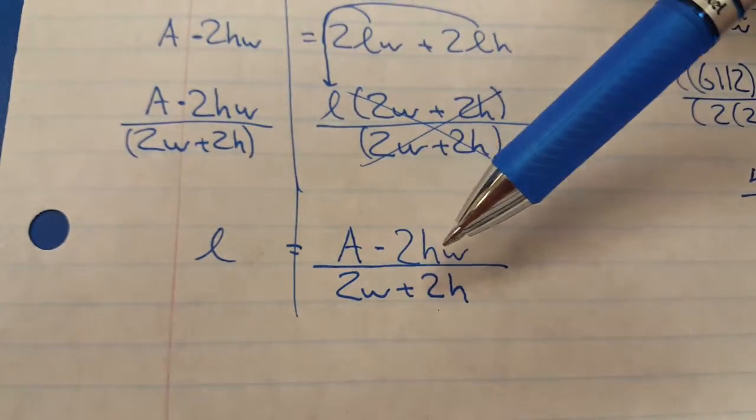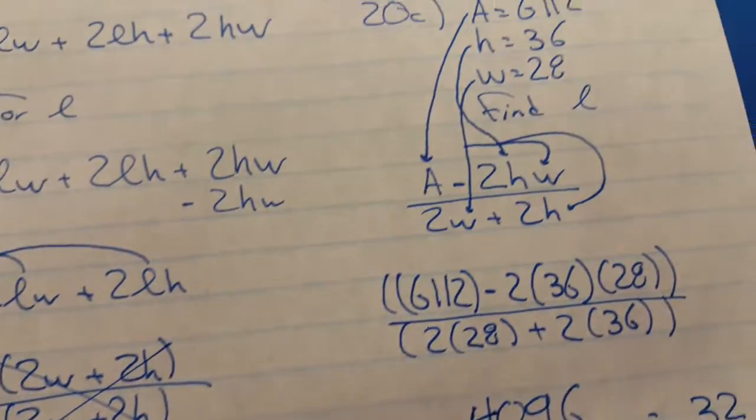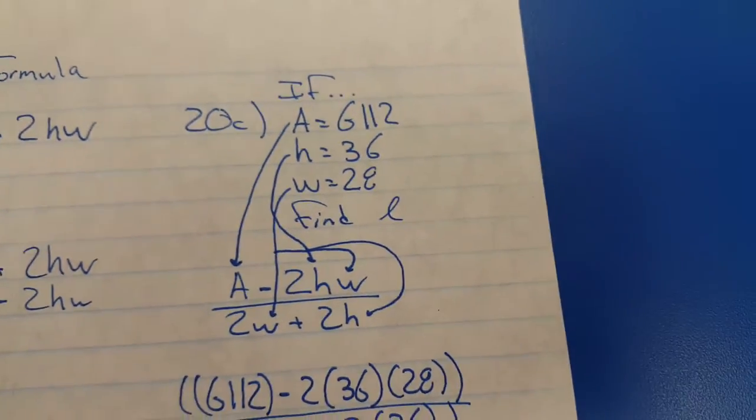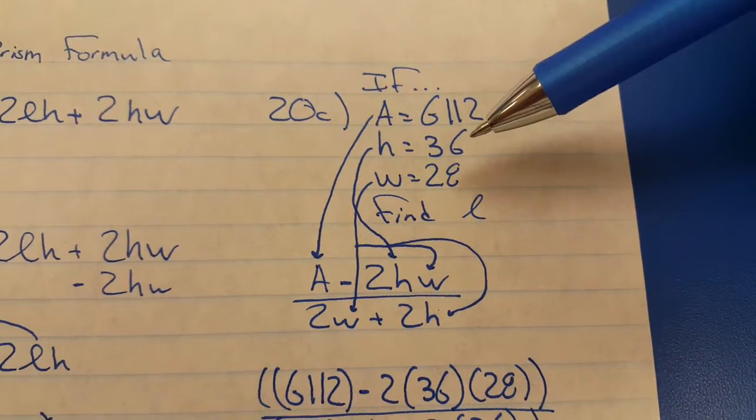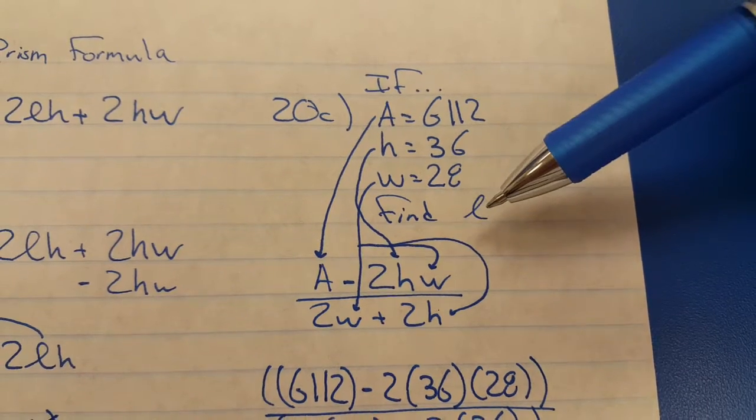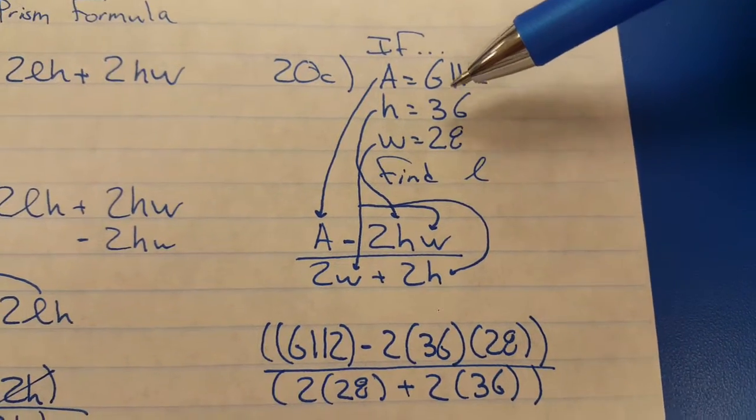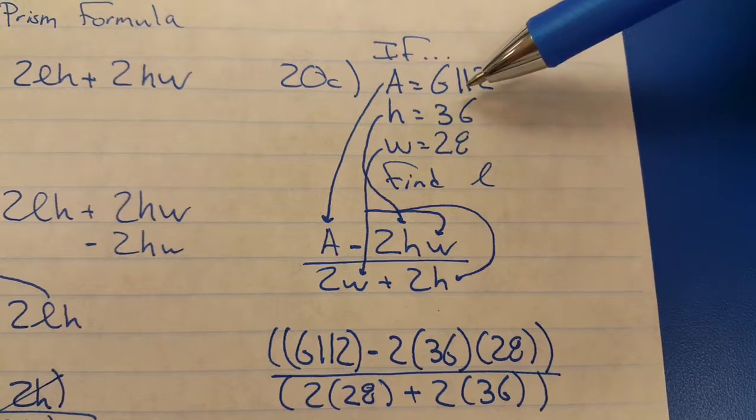And part C, they just so happen to do that. As you can see, they say if the area is this much and the height is this much and the width is this much, find the L. Okay, sweet. Here you go. You put the A, the H, and the W, these numbers 6112, 36, and 28, you put them into the formula that you have just created.